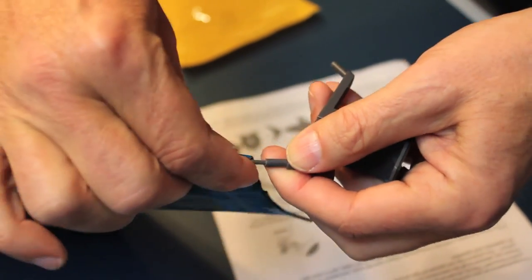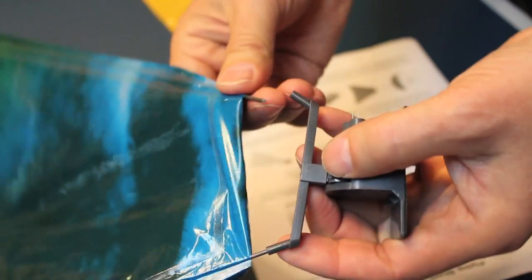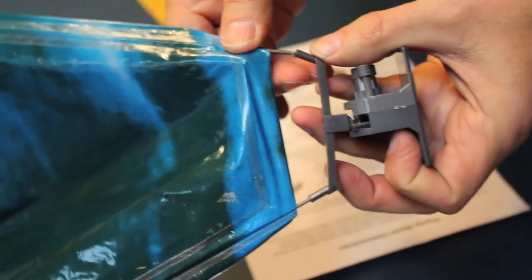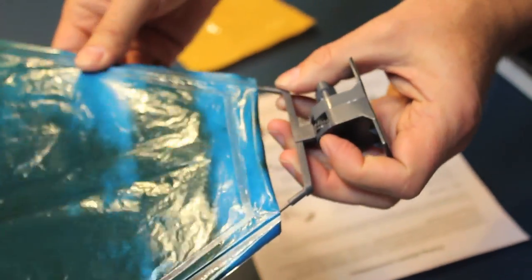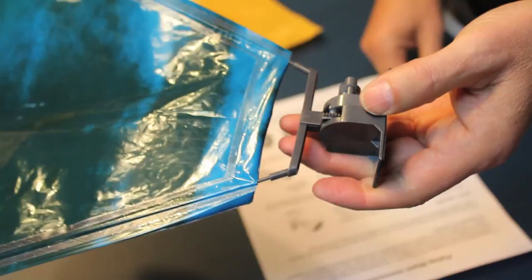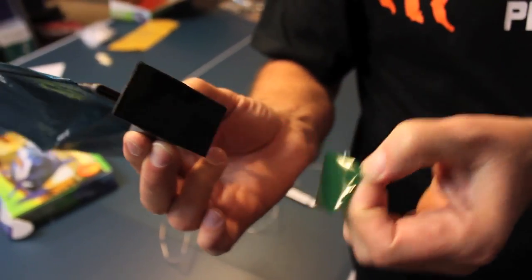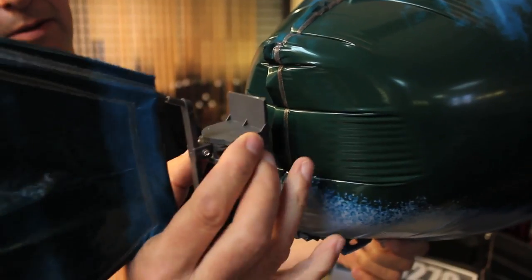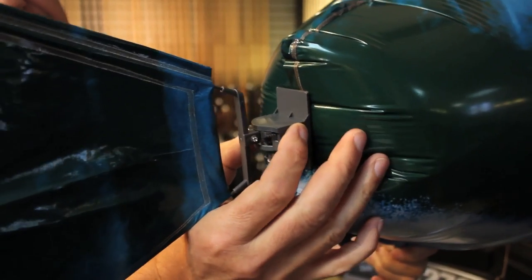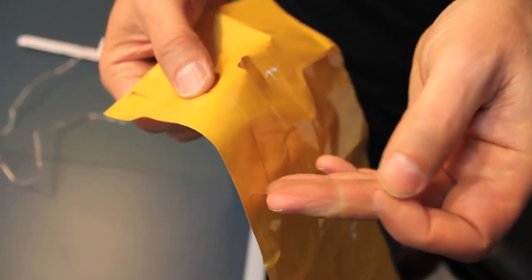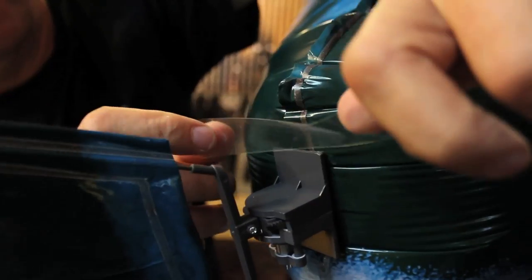Attach the tail fin to the tail fin assembly by inserting the rods into the two grooves on the tail fin assembly. Remove the liner of the two-sided tape on the fin assembly and press it firmly to the end of the fish body. Attach two rectangular pieces of clear tape to the fin assembly.